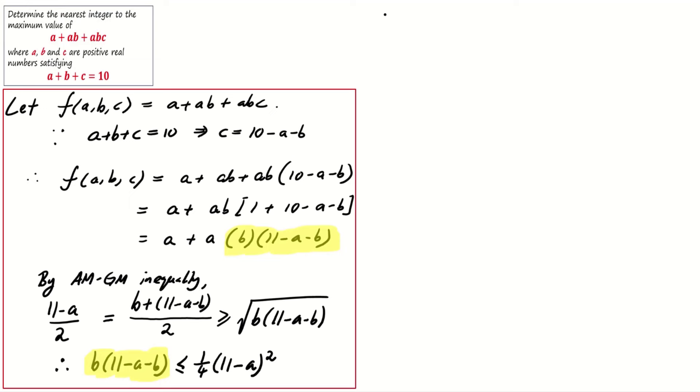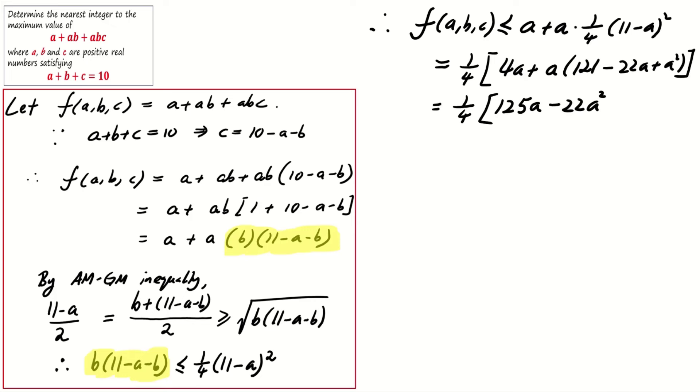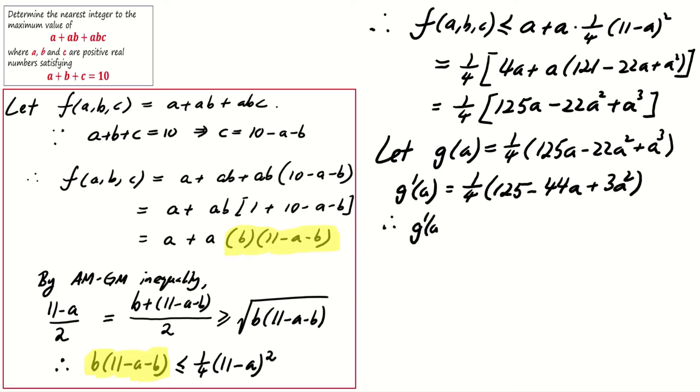With the result from AM-GM inequality, we find that the expression of f simplified, allowing us to deduce that the maximum of f can be represented as a cubic polynomial in terms of a. We let this degree 3 polynomial be g(a). Following standard calculus procedures, we find the derivative of this polynomial, set it to 0, and solve for a to find the maximum value.